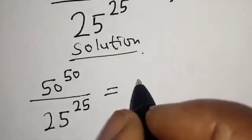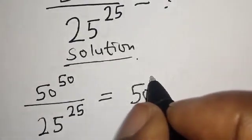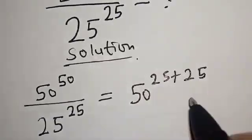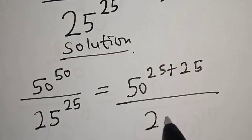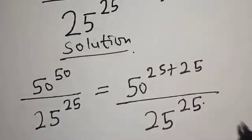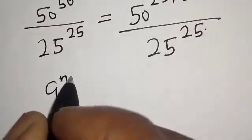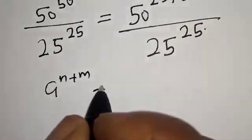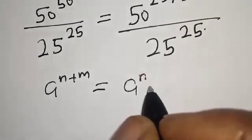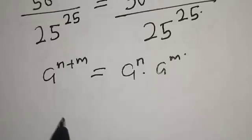Solution: we have 50 raised to power 50 over 25 raised to power 25. This is equal to 50 raised to power 25 plus 25 over 25 raised to power 25. Recall that if you have a raised to power n plus m, this equals a raised to power n multiplied by a raised to power m.